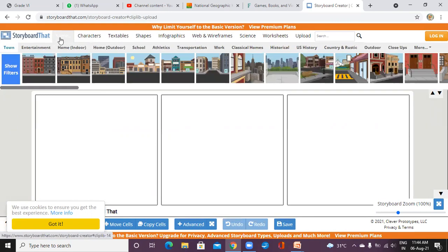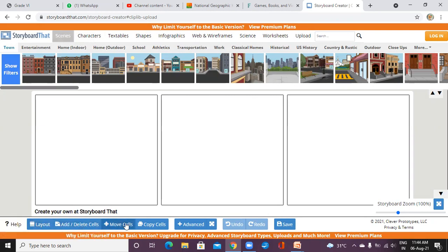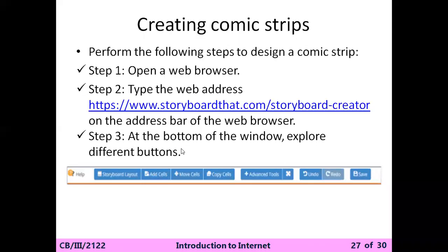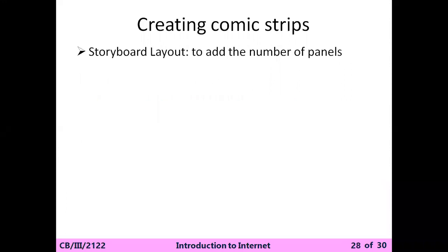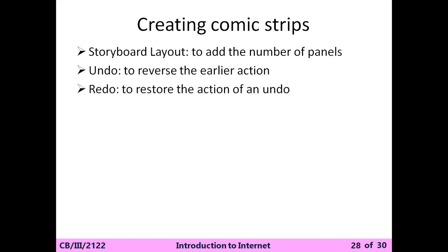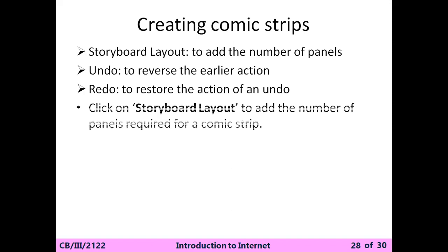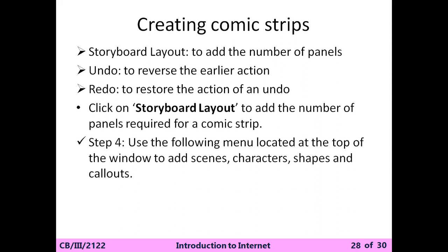Whenever you click on the scenes, first learn about the layout options: add, delete cell, move cell, copy cell, advance, undo, and save. Layout is used to add the number of panels — how many images you want and how many horizontal lines. Undo reverses the earlier action; redo destroys the undo action. Click on the storyboard to create your layout — how many images do you want in your comic strip.